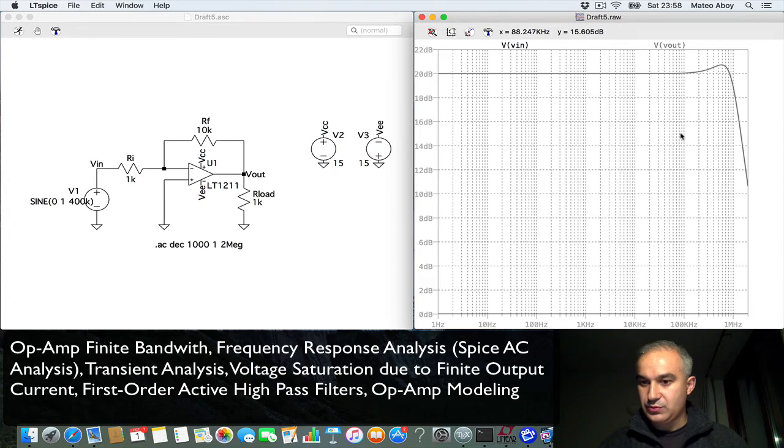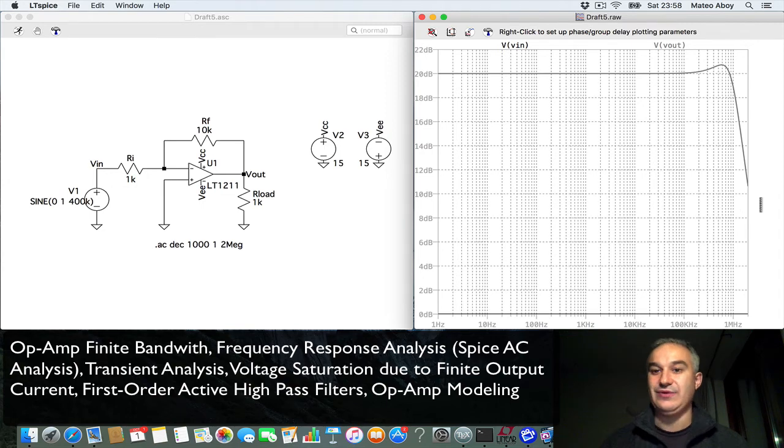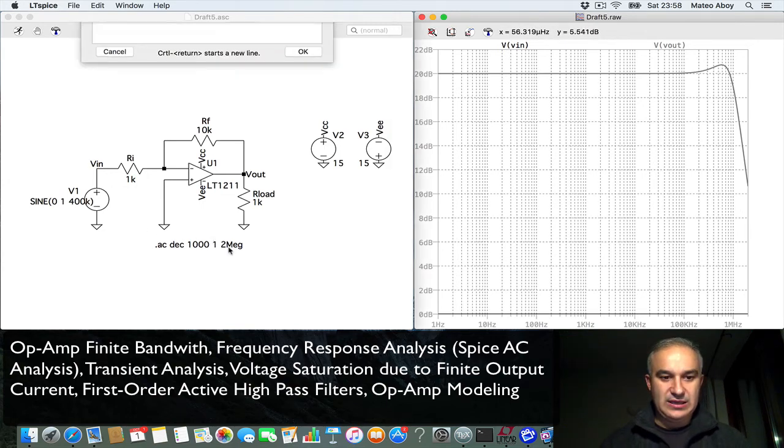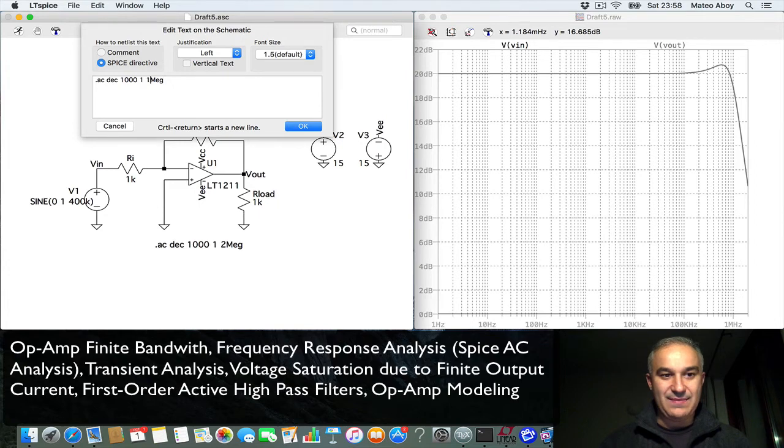You see a response with a gain of 20 dB, meaning a gain of 10, throughout all the way to 100 kilohertz. Then actually it overshoots a little bit, and then boom boom, you see that decrease that happening. Let's do it a little bit more, let's do like 10 meg.